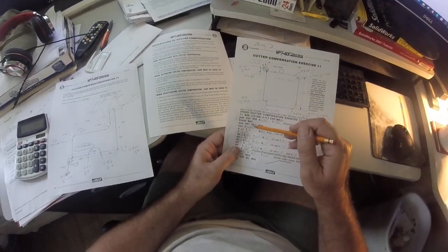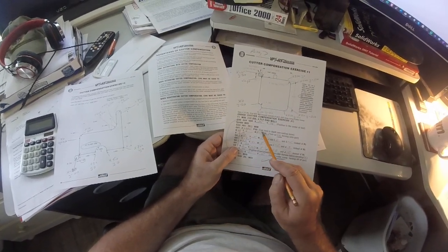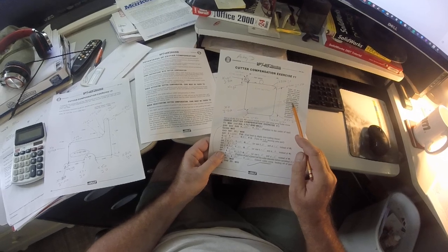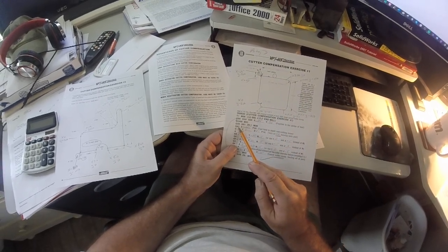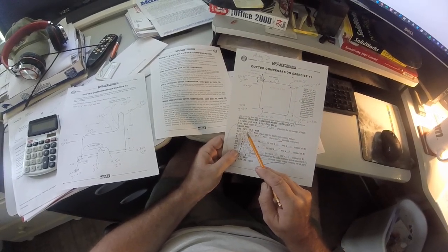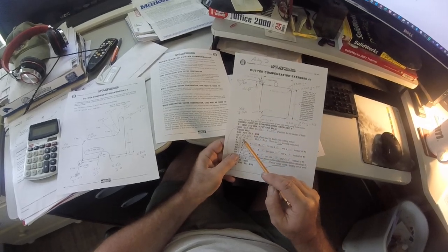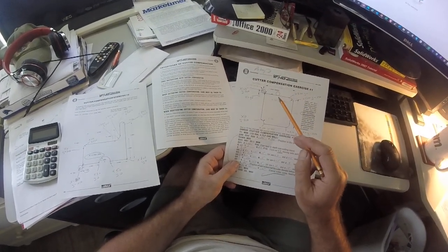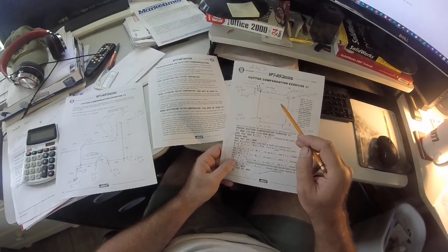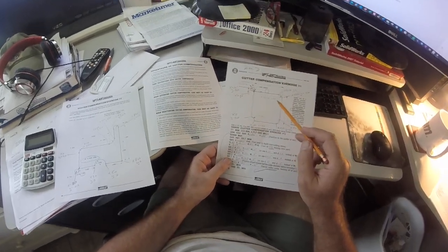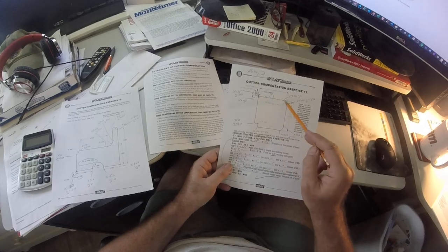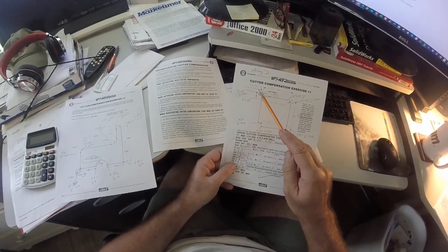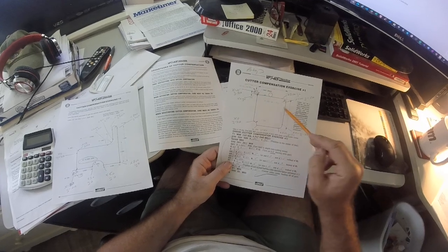I'm going to go down here, and it says fast feed to depth, and right here it says depth 625 deep. So G1 minus 625. Now we're going to do this with cutter comp. Same exercise as the linear interpolation, but we're going to use the print coordinates, not the center of the tool. This is center of tool, but after that it isn't.